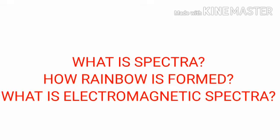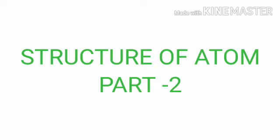In previous part, we learned what is spectra, how rainbow is formed and what is electromagnetic spectra. Rainbow having 7 colors, called VIBGYOR. Now, welcome to second part of the lesson, Structure of Atom.